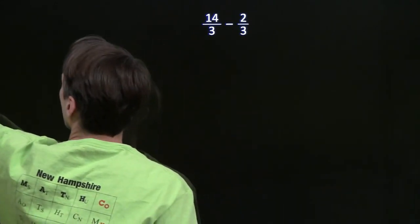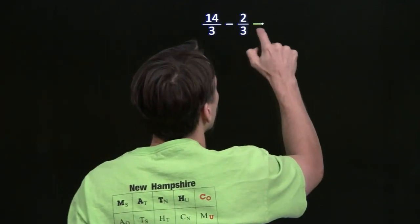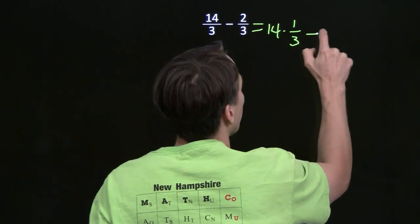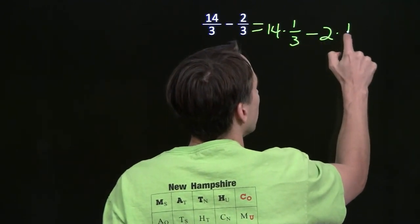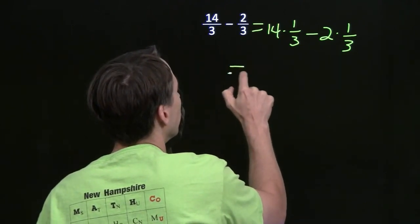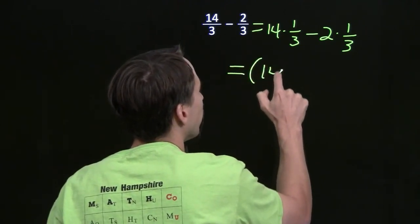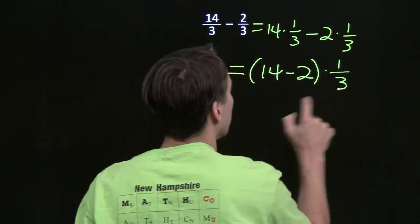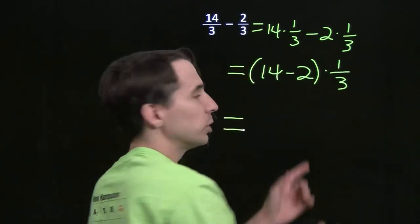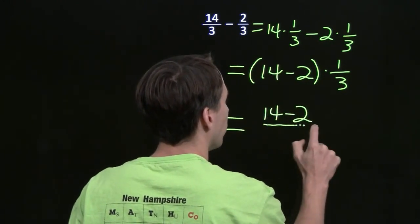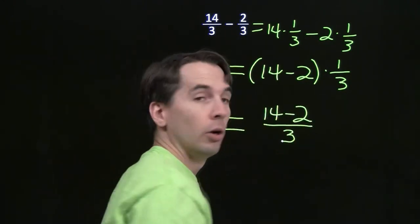Maybe we can do the same thing here. Let's try this: 14 times 1 over 3 minus 2 times 1 over 3. Sure enough, we can factor out the 1/3 and write this as (14 minus 2) times 1 over 3.